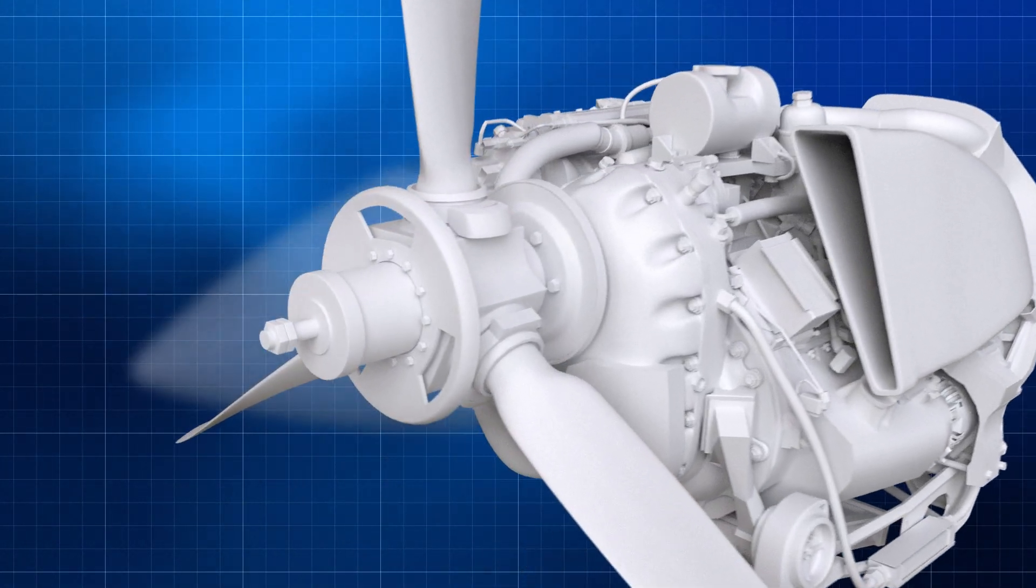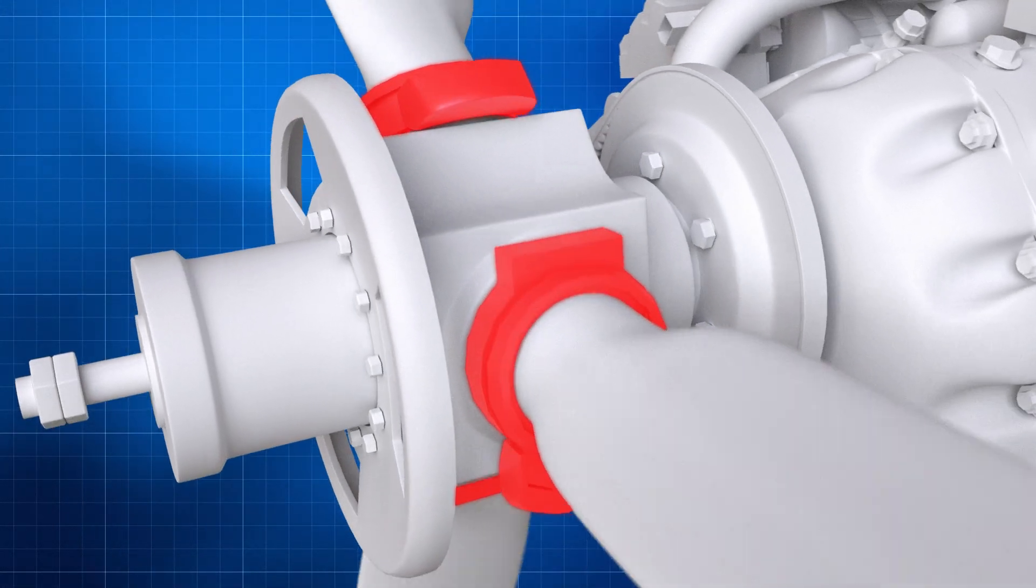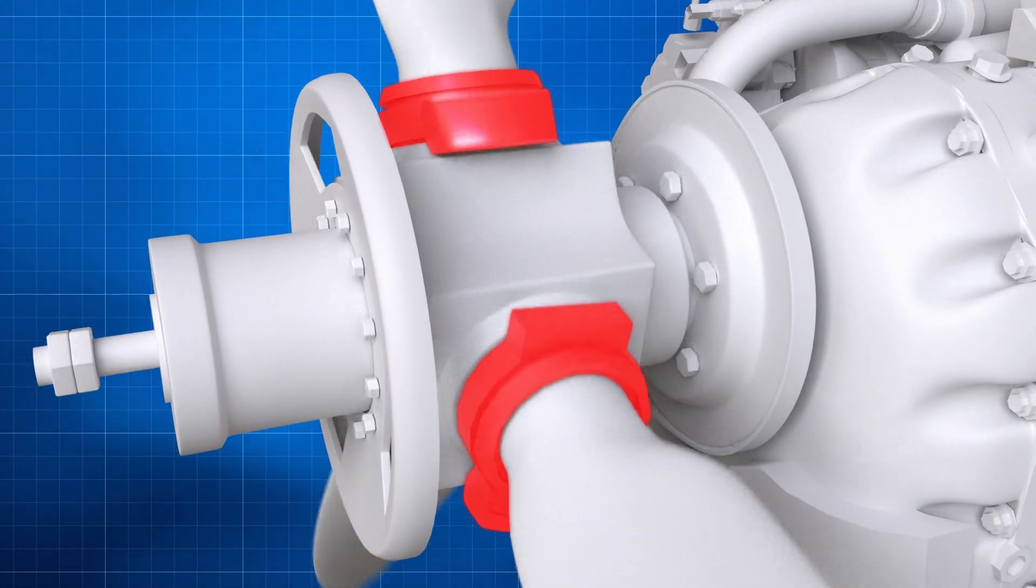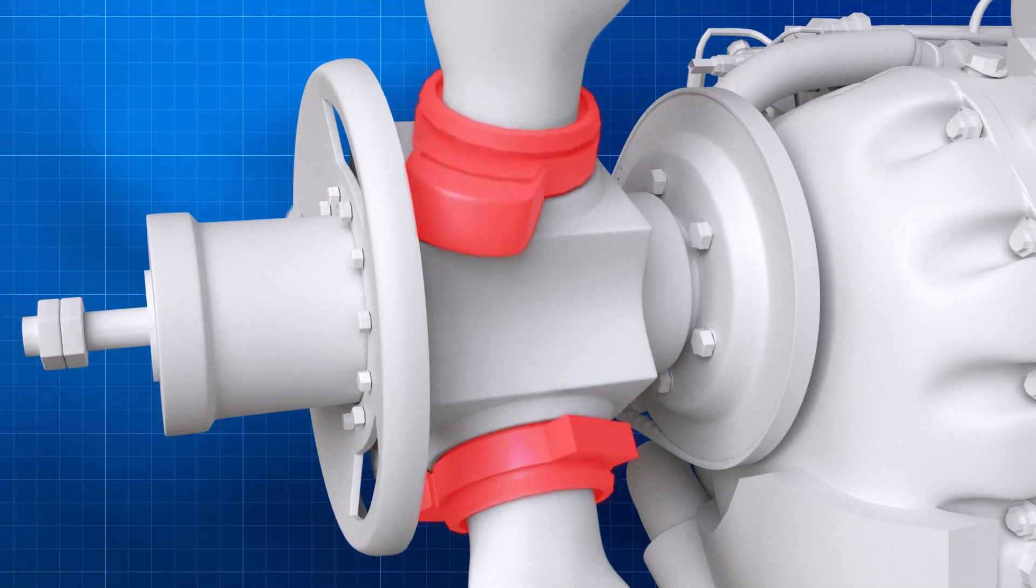Attached to the shank of each propeller blade are counterweights. These counterweights work to oppose the aerodynamic forces of a windmilling propeller and move the blades toward coarse pitch.